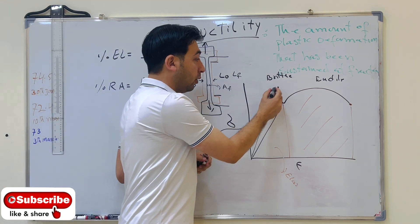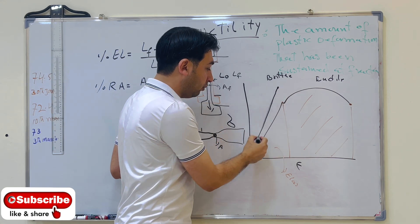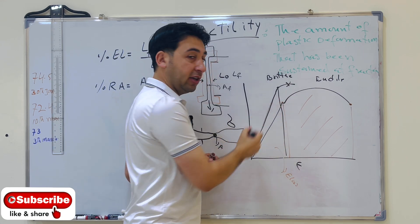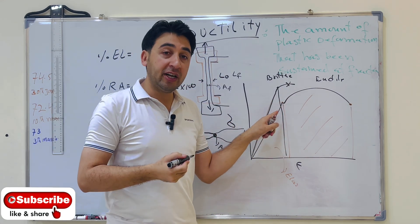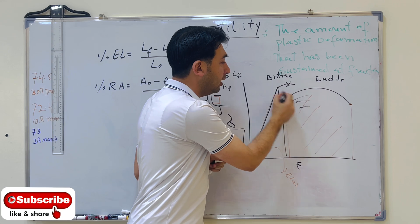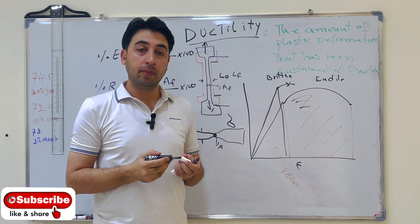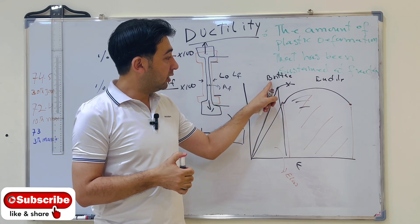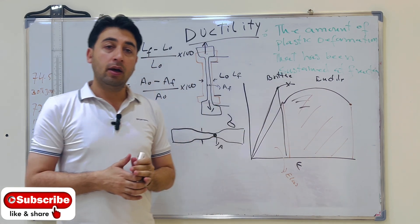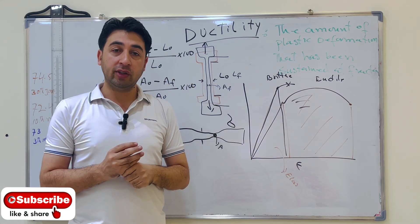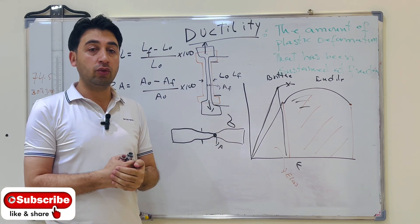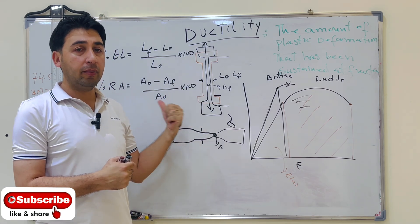For brittle material, when we apply force it reaches the fracture point with no plastic deformation — it breaks suddenly. That is why it is called brittle — it does not have any ductility. In brittle material there is no region after the proportional limit, so there is no ductility. Whatever happens after the proportional limit is associated with ductility.